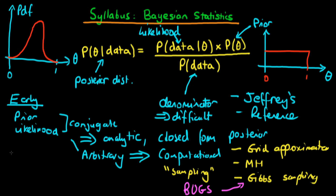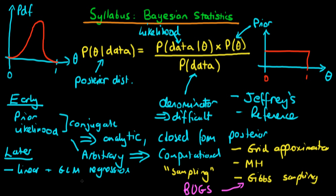Later on, we're going to talk about some more advanced concepts. We're going to discuss how linear and, in general, generalised linear models of regression can make use of Bayesian statistics, and how these Bayesian methods are, in my view, a lot better than classical statistics for the case of regression.